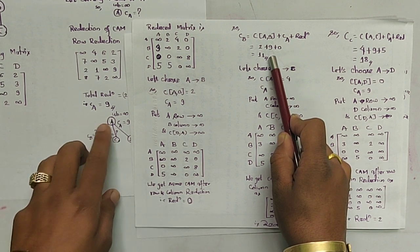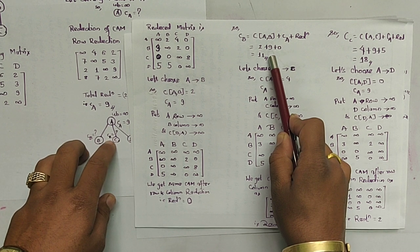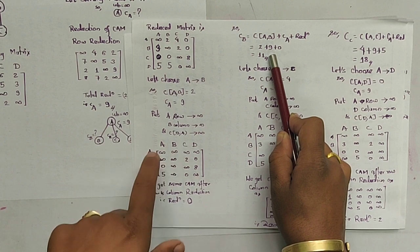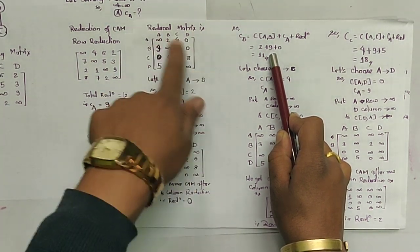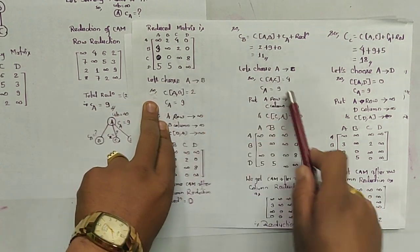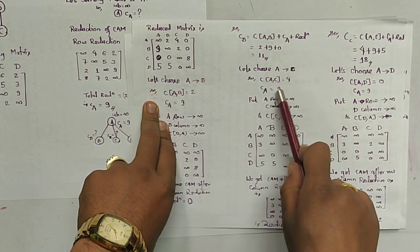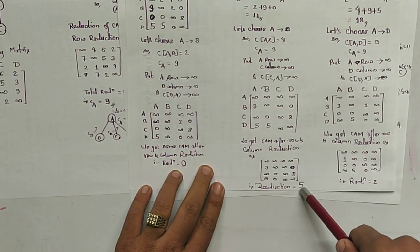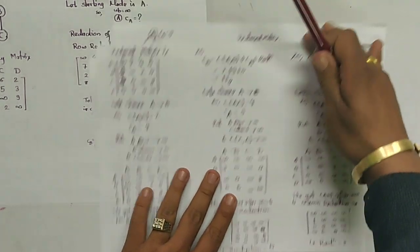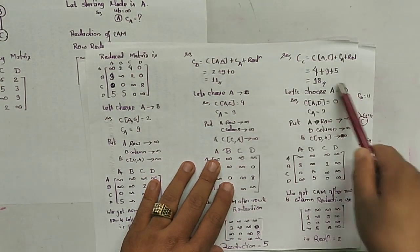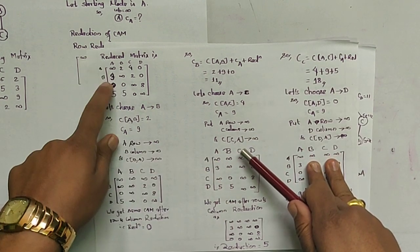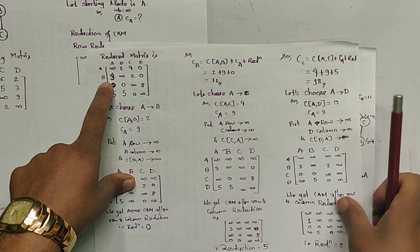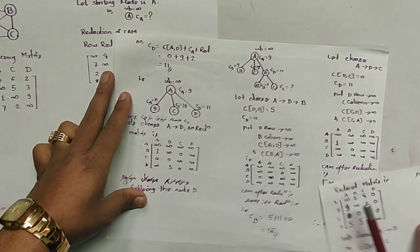For A to C, we use the previous matrix for node A — not the A to B matrix. A to C is 4, cost of A is 9, and after calculation the reduction is 5, giving cost of node C = 18. Similarly, for cost of node D using the same original A matrix, the reduction is 2, giving cost of node D = 11.